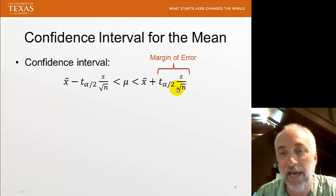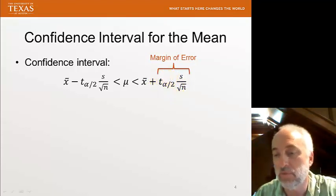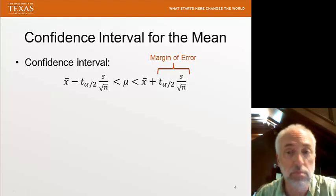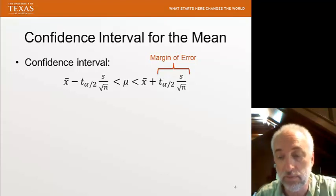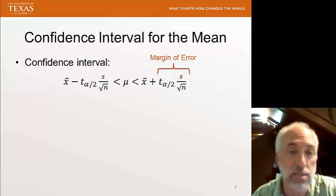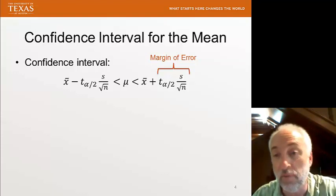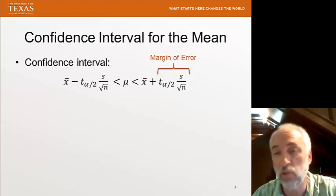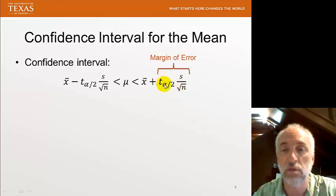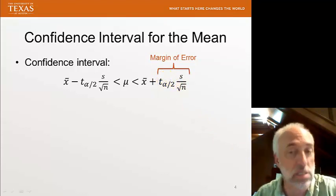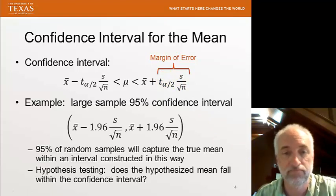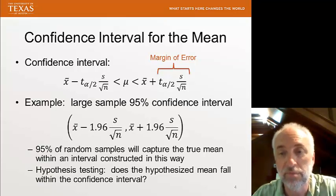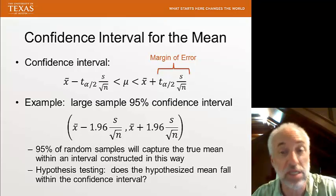Here, I show the t alpha over 2 number that would come from a student's t table for particular degrees of freedom and a particular, well, that comes from the particular sample size, degrees of freedom being n minus 1. If I have a large enough sample, then the t value approaches the z value.